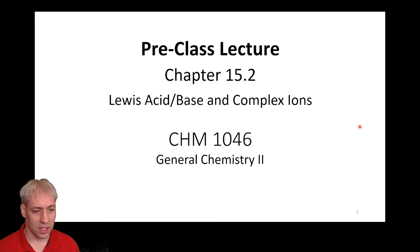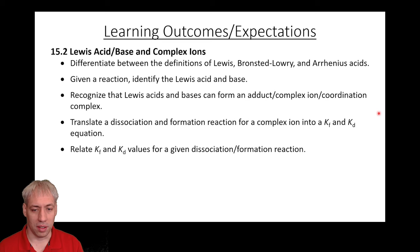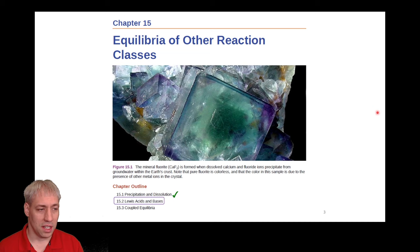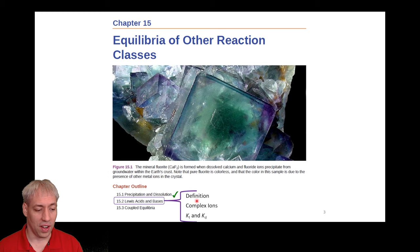In 15.2 we're going to continue our journey into the different types of equilibrium. We're going to talk about Lewis acids and bases and their formation of complex ions, which are an equilibrium condition with ions in solution. We'll first define Lewis acids and bases, then talk about complex ions — something that can form from Lewis acid-base interactions — and then the equilibrium constants that describe complex ion formation or dissociation.